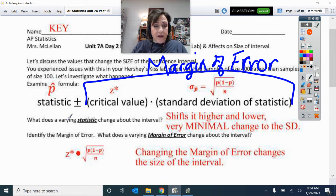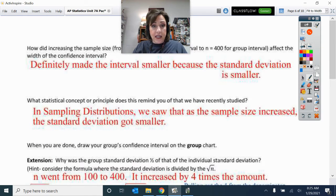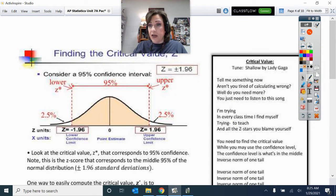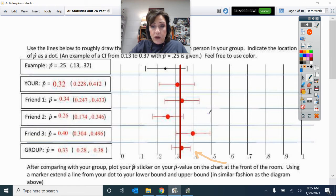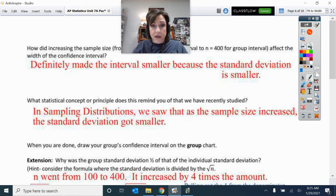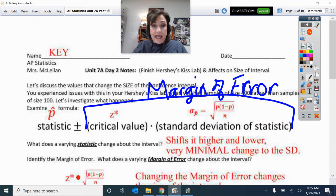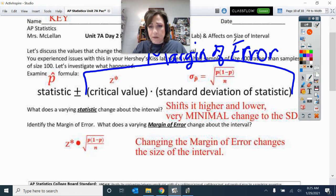What does a varying statistic change? So if I change this P hat, hopefully you could envision that it was shifting those intervals left and right. See, look here. That change in that P hat was shifting those intervals left and right. It does a little minimal change to this standard deviation, a little, but not a ton, not as much as that effect of the N.